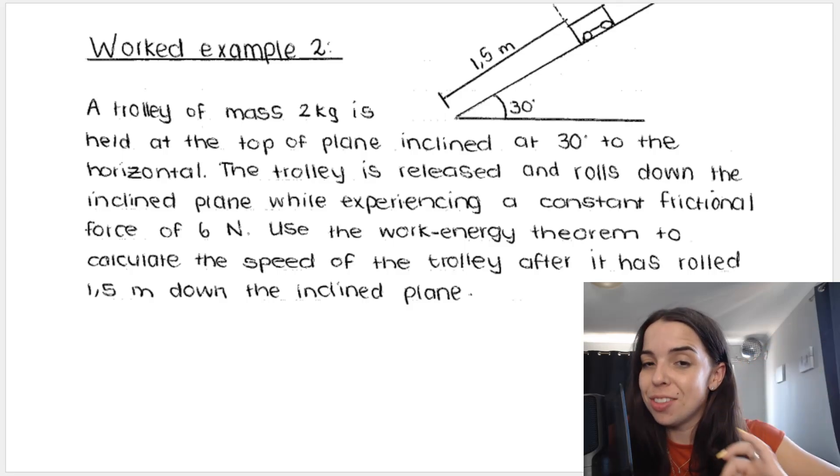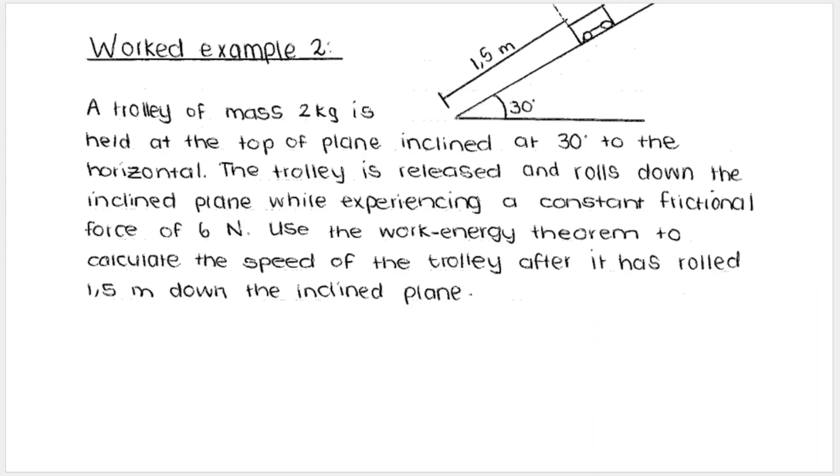In this example, worked example 2, I've got a trolley of mass 2 kilograms, and it's held at the top of an inclined plane at 30 degrees to the horizontal. Now it might not be obvious, but they say it is initially held at the top of the plane, which means that the initial velocity of my object is zero.